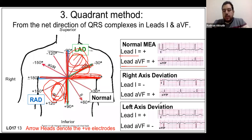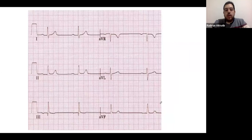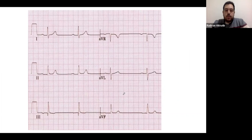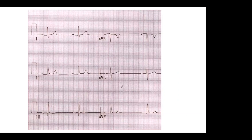Looking at ECG examples: for the first ECG shown, students are asked to identify the axis. The answer is normal — because both lead one and lead AVF are positive, placing the axis in the normal quadrant between zero and positive 90.